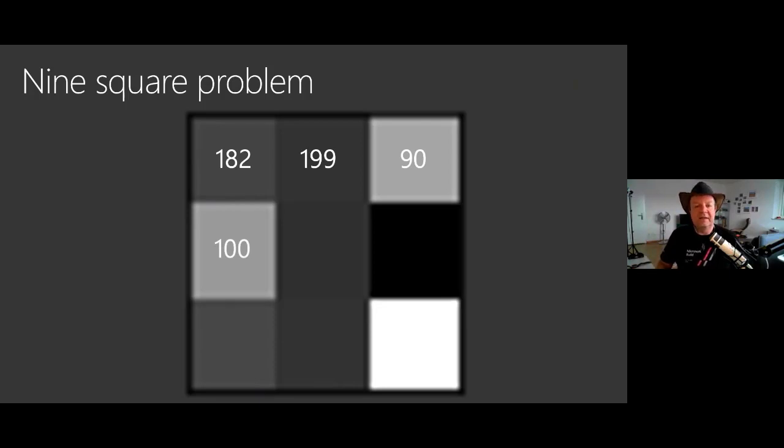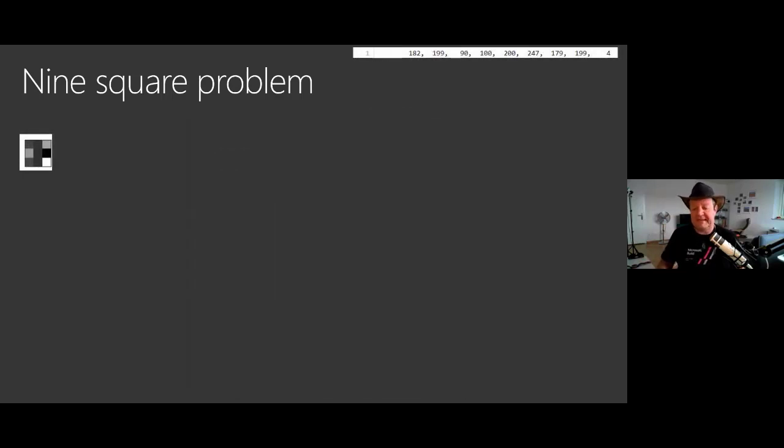We have here 100, we have something almost black at 247. We have something down there, almost white at 4. In this system, my human eye can tell me very fast the top row is darker. I don't even need to calculate, but of course for computers, they cannot do that.